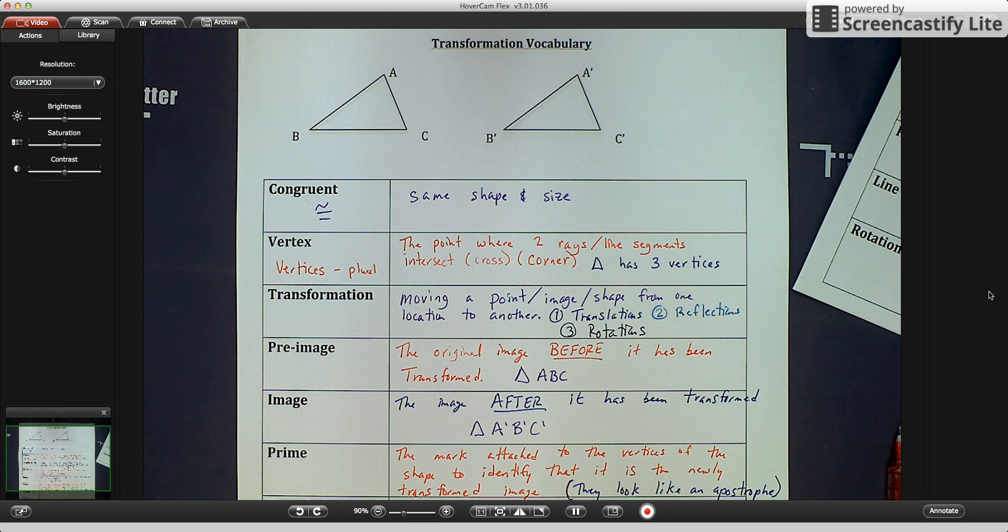So those are your vocabulary terms. I'm going to have you come back into class, and we're going to go over the images up top and show you congruent markings and congruent shapes of the triangles up top and write some congruent statements. Make sure you get these vocabulary terms down, and I'll see you in class. Take care.